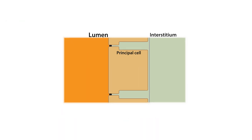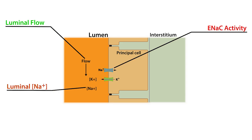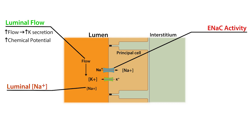Now let's review the major factors that influence potassium secretion: luminal flow, luminal sodium concentration, and ENaC abundance and activity. Increased luminal flow stimulates potassium secretion. First, increased luminal flow keeps luminal potassium low — in other words, it affects the chemical potential. Second, it increases ENaC-dependent sodium reabsorption, which makes the luminal potential more negative. It also stimulates the sodium-potassium ATPase, which further increases the intracellular sodium concentration and the potassium chemical potential.